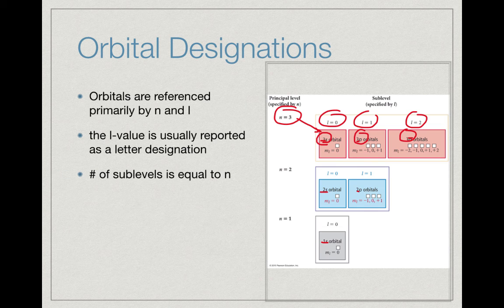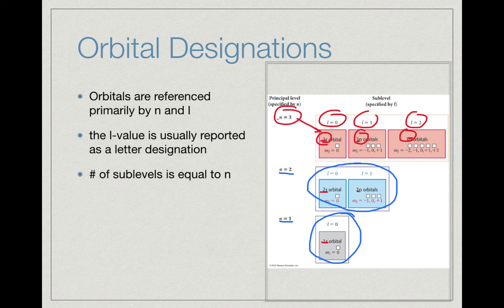The number of sublevels is equal to the value of n. So for n equals 1, we have just 1 sublevel; for n equals 2, we have 2 sublevels; and for n equals 3, we have 3 sublevels. The number of sublevels is always equal to n.